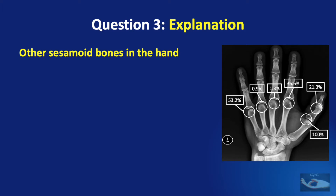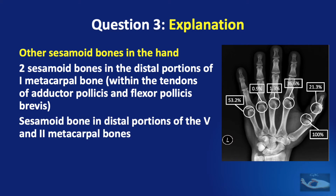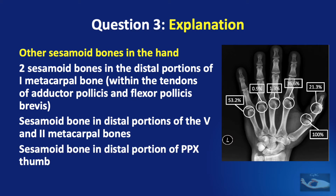There are other sesamoid bones in the hand. In decreasing order of frequency, there are two sesamoid bones in the distal portions of the first metacarpal bone within the tendons of the adductor pollicis and the flexor pollicis brevis. There may be a sesamoid bone in the distal portion of the fifth and second metacarpal bones, and there may be a sesamoid bone in the distal portion of the proximal phalanx of the thumb.